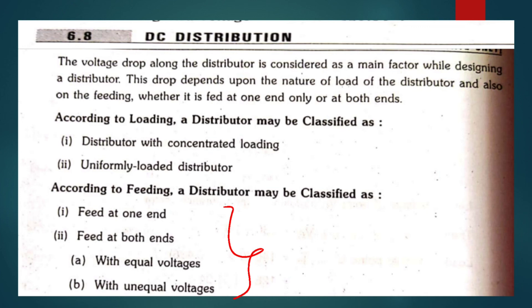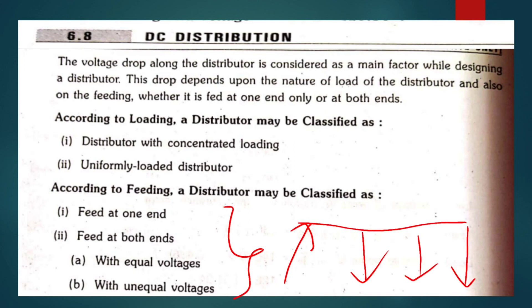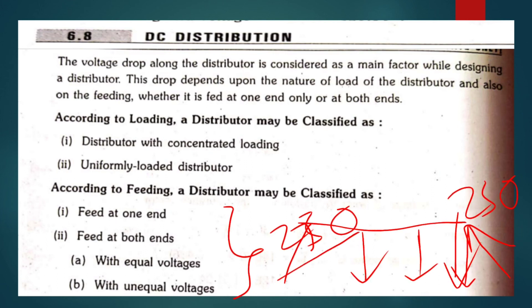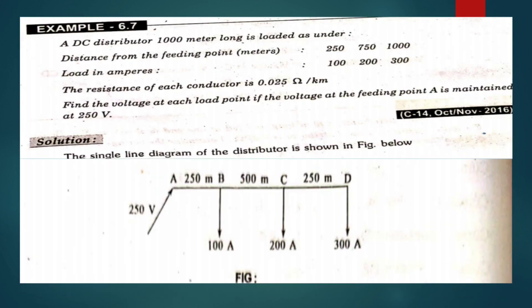First we will do the DC distribution problems, and then the AC distribution problems. The difference between DC and AC distribution is that in AC distribution we also consider phase angles, whereas in DC we cannot consider angles. According to the loading it is divided into: distribution with concentrated loading and uniformly loaded. According to the feeding, the distributor may be fed at one end, or at both ends with equal or unequal voltages of 230 volts or 240 volts. The problems will be discussed in the next class.